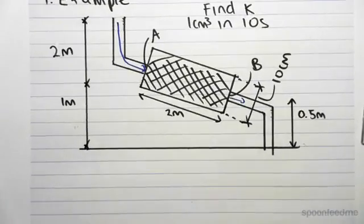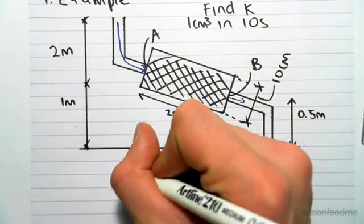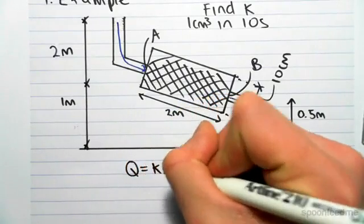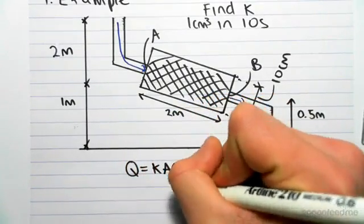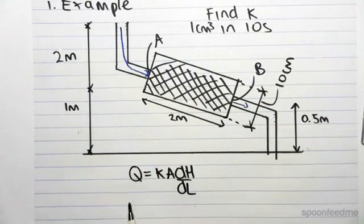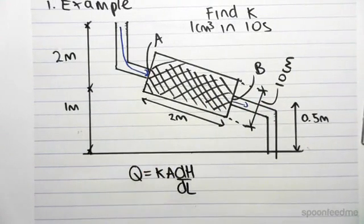We know Darcy's law states that q equals kA dH/dL. We're going to find q, A, dH, and dL, and then rearrange this equation to get k.